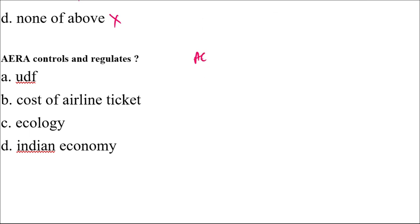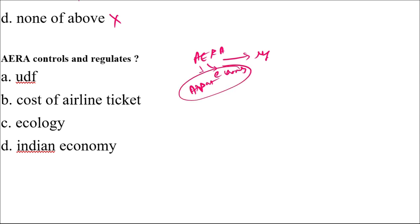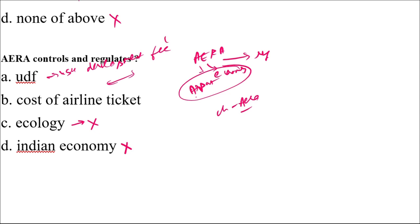Next, AERA — which is the Airport Economic Regulatory Authority — controls and regulates the airport economy. It does not regulate the Indian economy overall, and ecology is something totally different. From the chapter on AERA, you'll notice that UDF, the User Development Fee charged from passengers, is decided by AERA. They control and regulate that component. The cost of airline tickets is up to the airlines, though AERA has some regulation. The appropriate answer here is UDF.